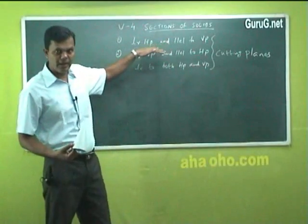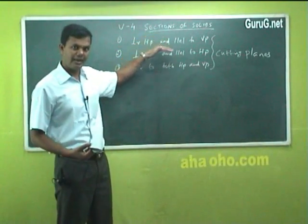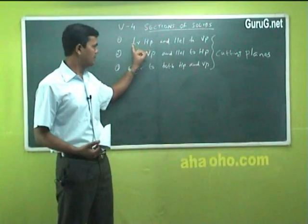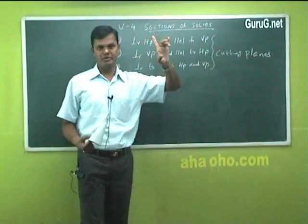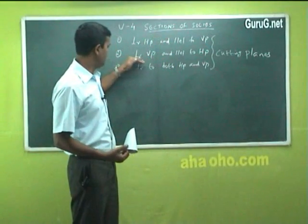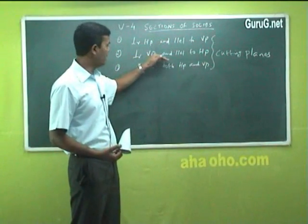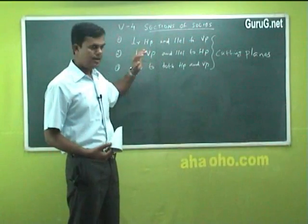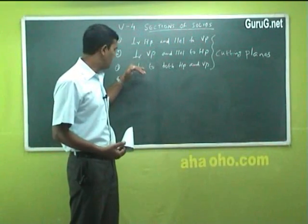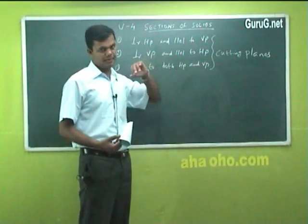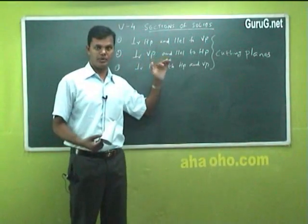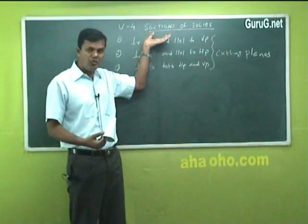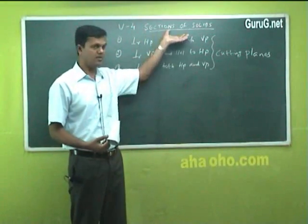A cutting plane for section of solids can be: first, perpendicular to HP and parallel to VP. Second, perpendicular to VP and parallel to HP, vice versa. And third, it could be perpendicular to both HP and VP. It cannot be parallel to both HP and VP.